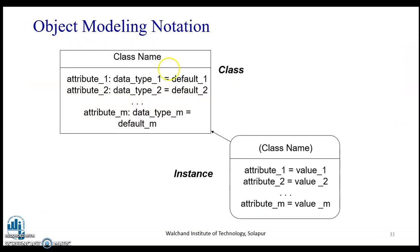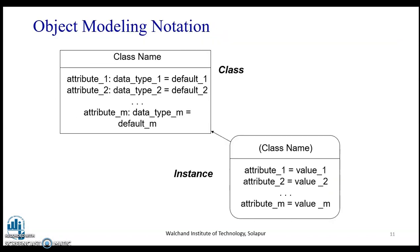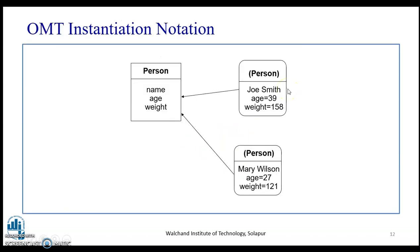Here you can see the object modeling notation for the class and the instance. One way uses three partitions, and another uses just two — the class name and attributes. An example is the class Person with name, age, and weight as attributes. The instance shows: name is Joe Smith, age is 39, weight is 158.